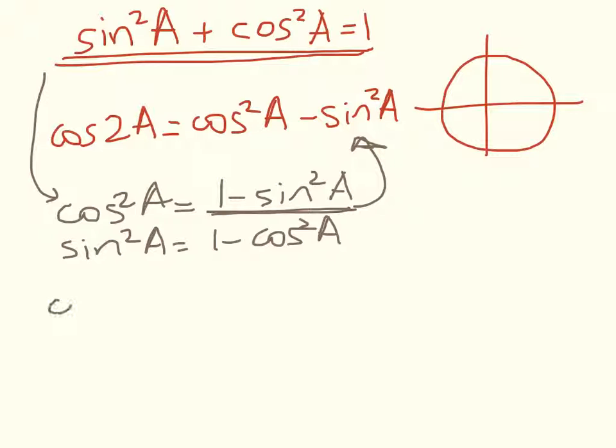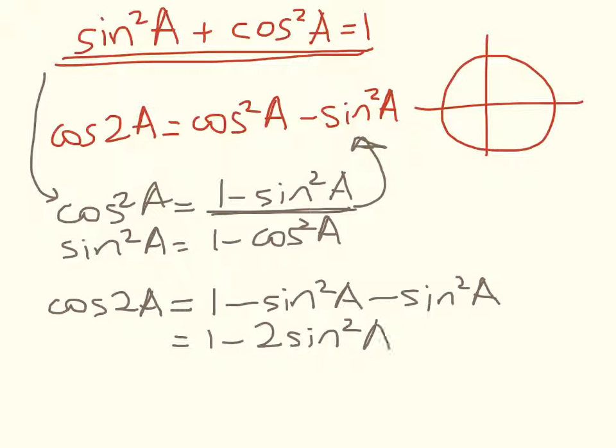So let's first do a substitution for cos squared of A. So cos of 2A is equal to 1 minus sin squared of A minus sin squared of A. So that's 1 minus 2 sin squared of A. Now, if I rearrange that, I get 2 sin squared of A equals 1 minus cos of 2A.